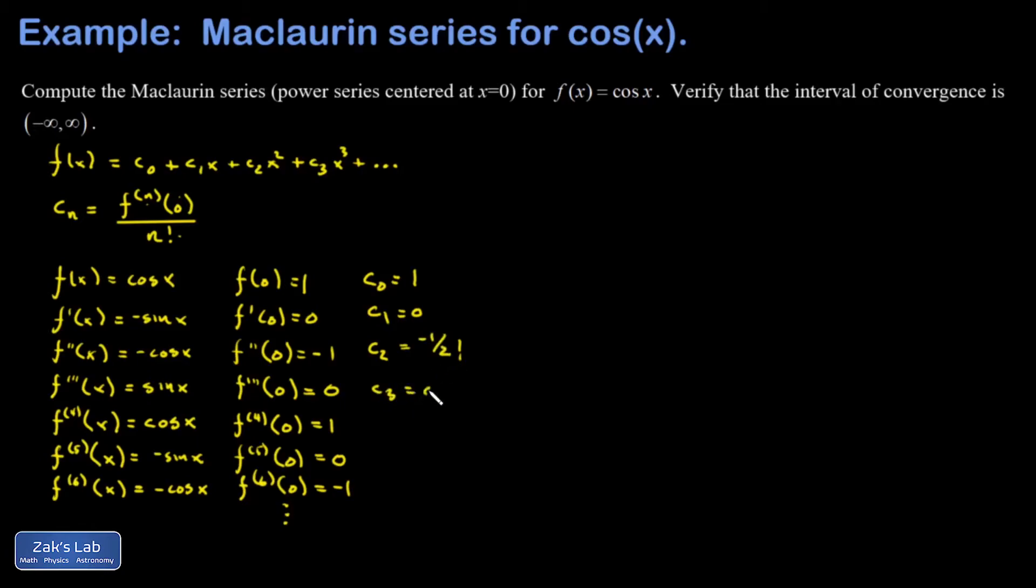c_3 vanishes. c_4 is going to be one over four factorial. c_5 vanishes. c_6 is negative one over six factorial, and the pattern continues.